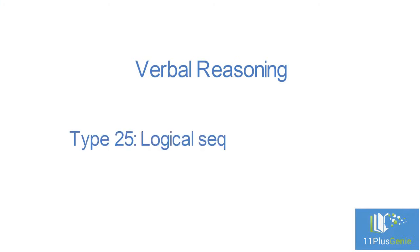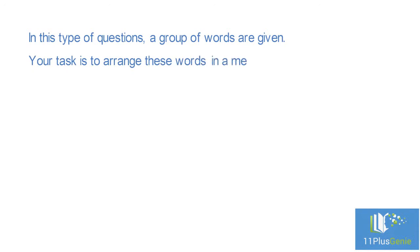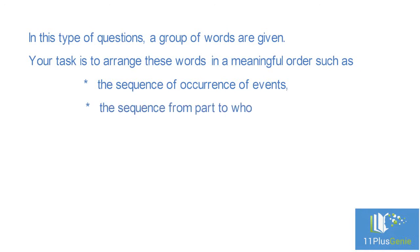Type 25: Logical Sequence of Words. In this type of question, a group of words are given. Your task is to arrange these words in a meaningful order, such as the sequence of occurrence of events, sequence from part to whole, or sequence of increasing or decreasing size, and then choose the correct sequence from the answer choices.